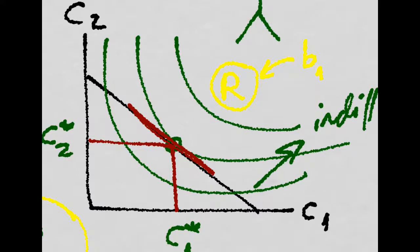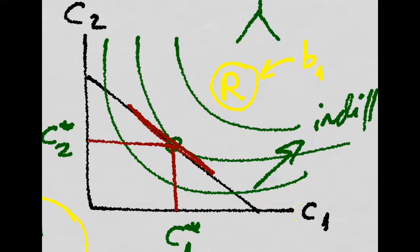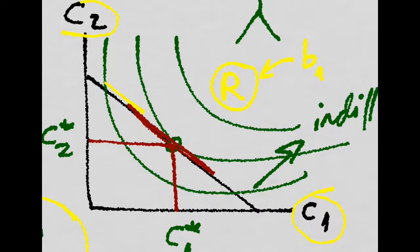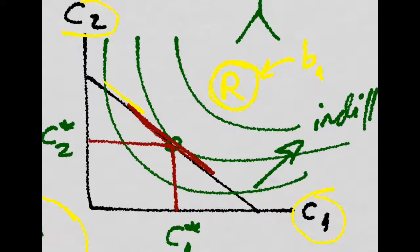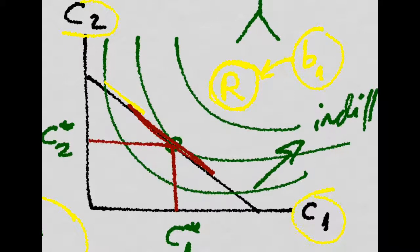So the key here is that what relates present consumption and future consumption is the real interest rate, which is paid on the bonds you lend in the period one.